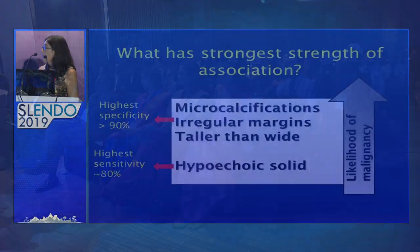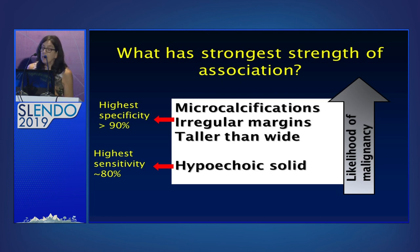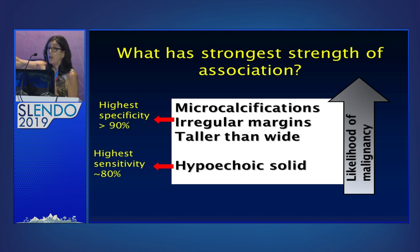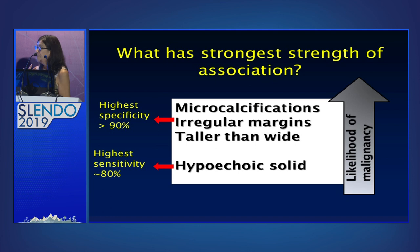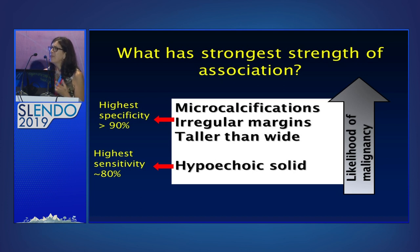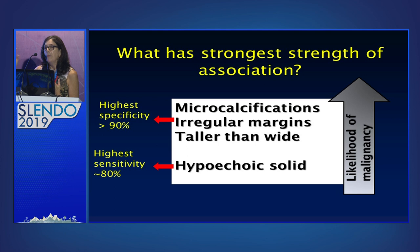When we put these together: microcalcifications, irregular visible margins, and taller than wide — plus hypoechoic and solid — nodules that exhibit these top three characteristics are virtually always cancers. Benign nodules will not have microcalcifications, defined irregular margins, and a taller-than-wide shape — it is very unusual — so this has a very high specificity. That is a nodule that before you biopsy it is very likely to be malignant. But if you want to be sensitive and find most of the cancers, it's the hypoechoic solid nodule with smooth margin and non-calcified that is the most sensitive combination. The higher the likelihood of malignancy, the more specific the pattern, but you lose sensitivity.